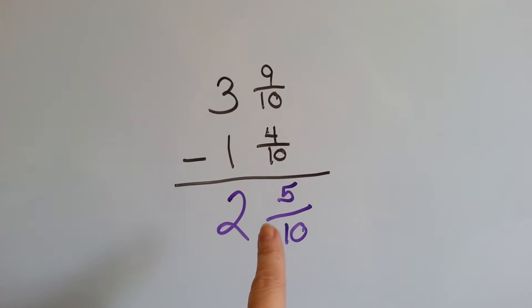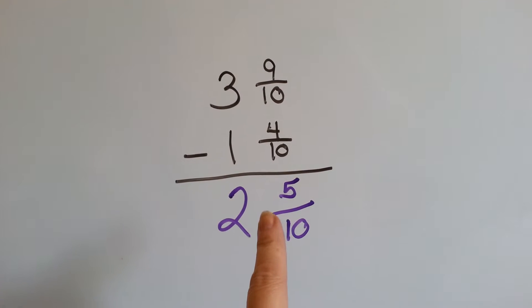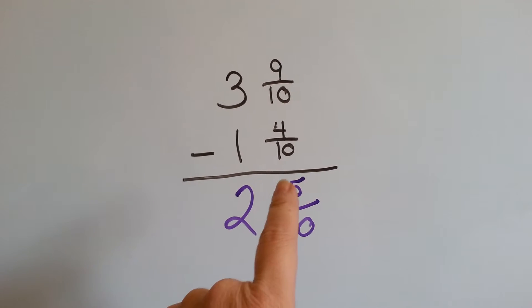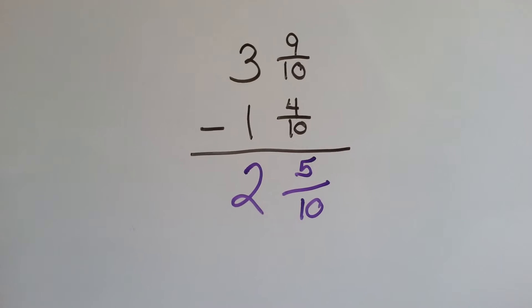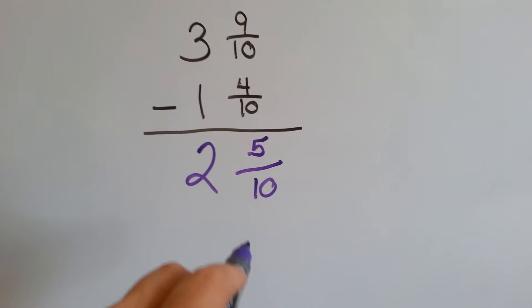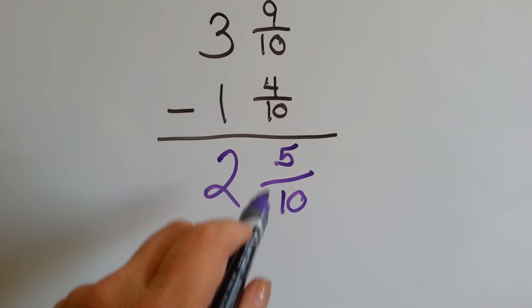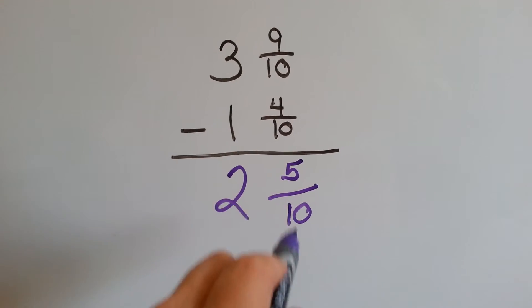But this fraction can still be simplified. 5 tenths can be simplified. Do you know right away what it can be simplified to? Well, what factor can go both into a 5 and a 10?